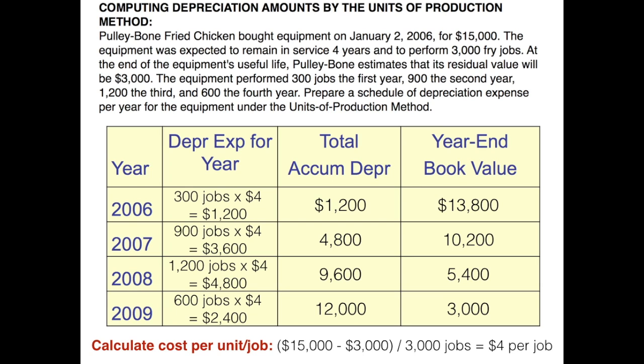Notice each year our total accumulated depreciation is increasing and the book value is steadily decreasing. And just like we saw with straight-line depreciation, we do not depreciate below the residual value.